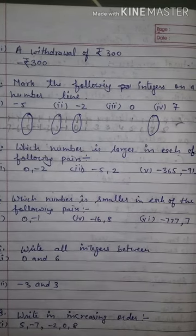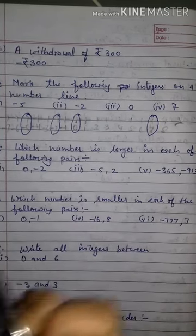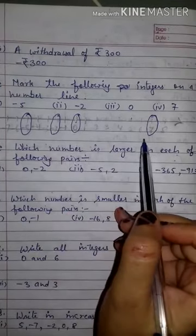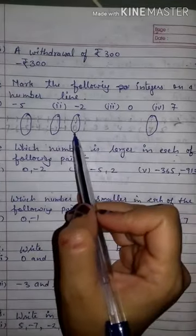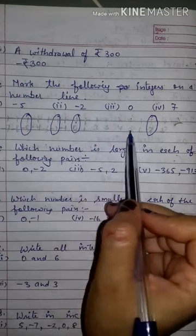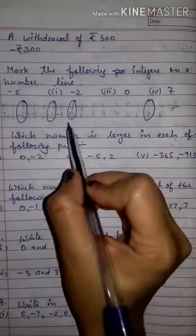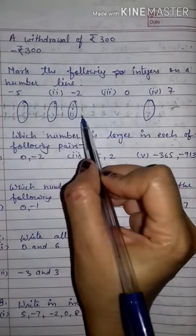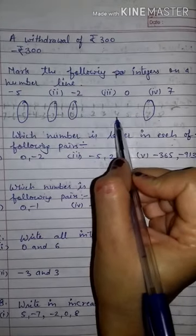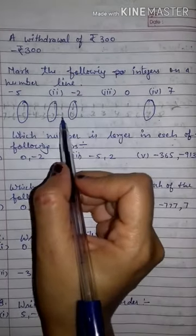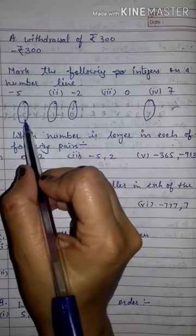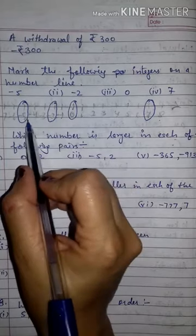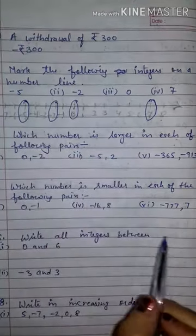Fourth question: which number is larger in each of the following pairs? Using the number line, as we move to the right-hand side, the value of integers increases. So the value of 7 is greater than 4. Similarly, for negative numbers: minus 1 is greater than minus 5, because the right-hand side negative number is always greater than the left-hand side number. 0 and minus 2 — 0 is on the right, so 0 is the greater number. Minus 5 and 2 — 2 is on the right-hand side, so 2 is greater.